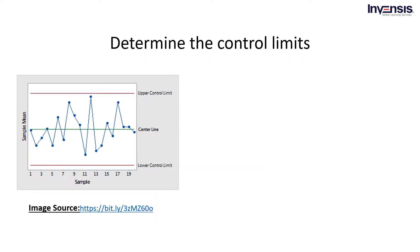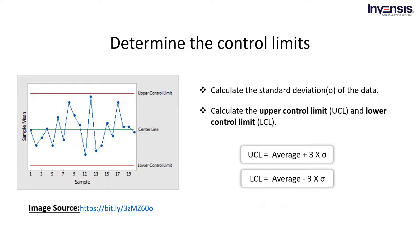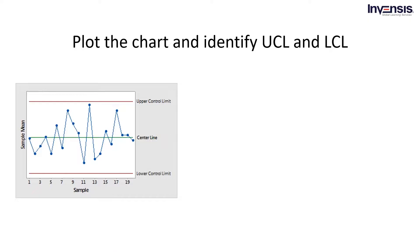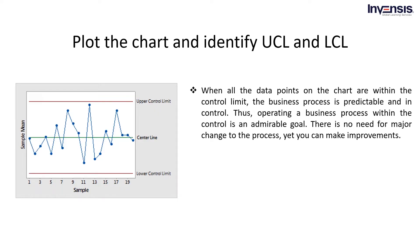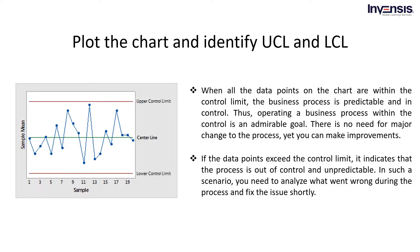The next step is to determine control limits by calculating the standard deviation of the data, then calculating the upper control limit and lower control limit. Finally, plot the data on the control chart and identify patterns. When all data points are within the control limit, the business process is predictable and in control — no major change is needed, though improvements can still be made. If data points exceed the control limit, the process is out of control and unpredictable, requiring analysis of what went wrong and a prompt fix.